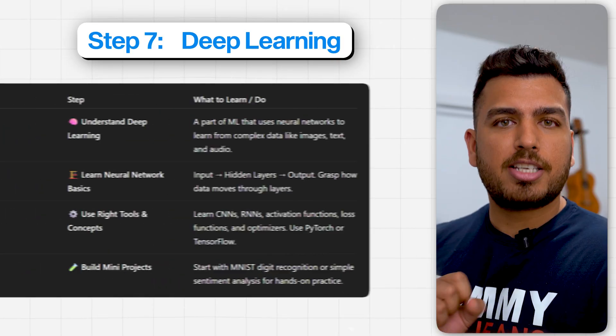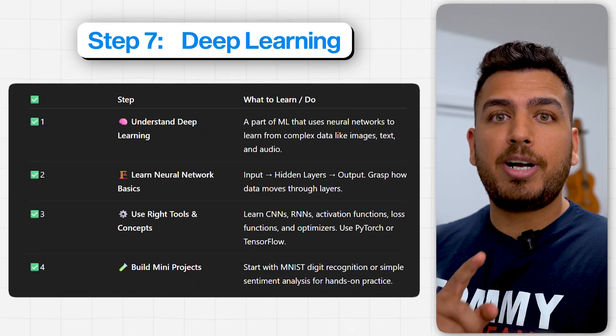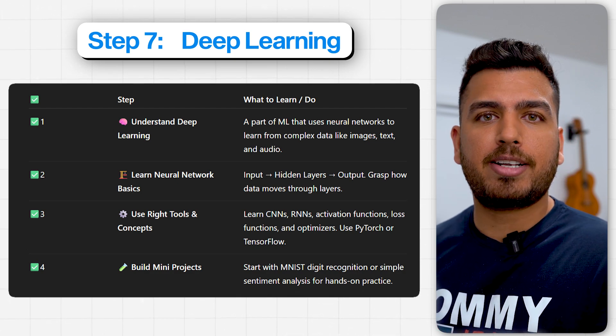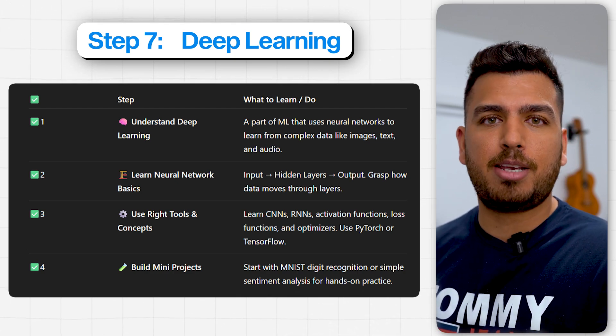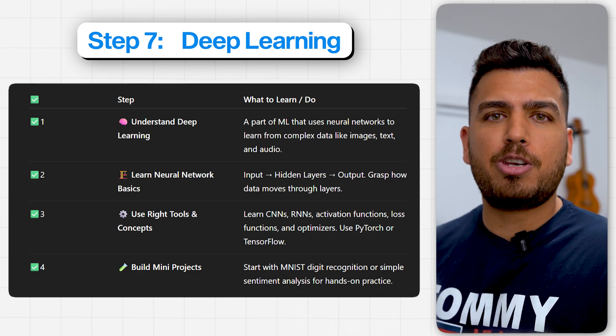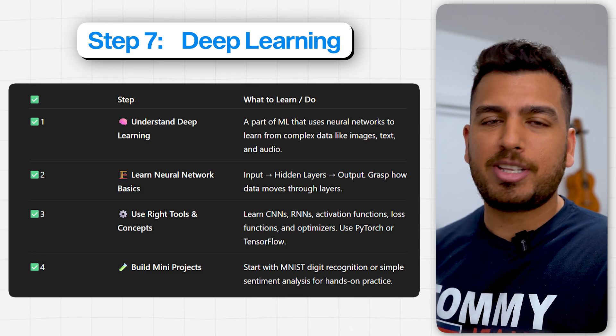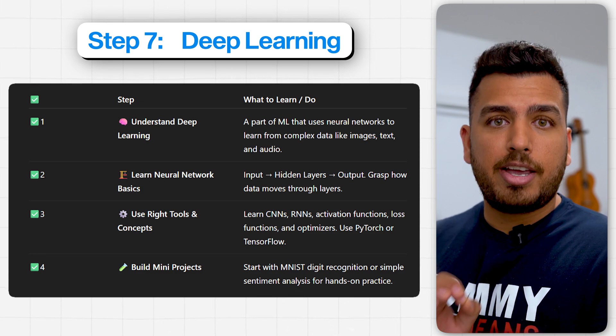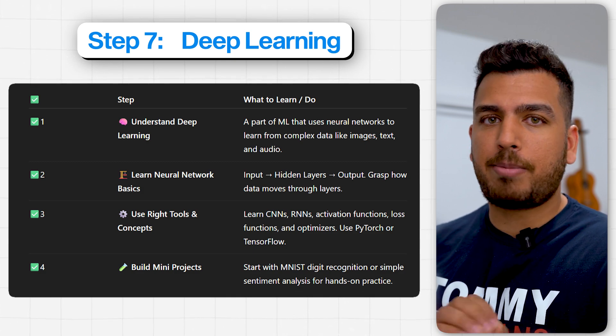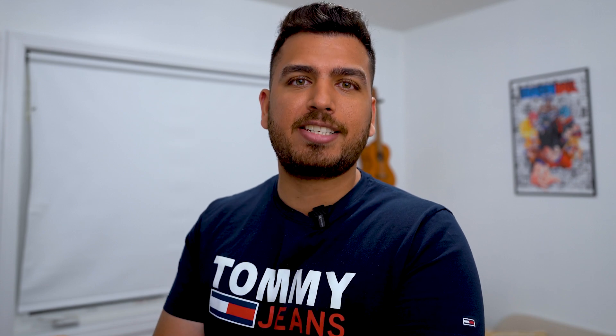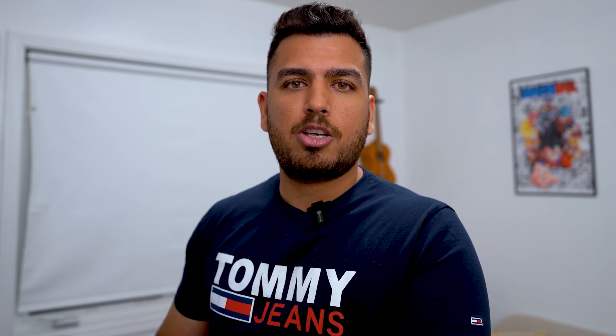If you want to go beyond machine learning, step seven is learning deep learning — a subset of machine learning that uses multi-layered neural networks to model complex patterns, especially useful in text, image, and audio data. Start with the basic structure of a neural network, which includes input layer, hidden layer, and output layer. Then explore CNNs for image data and RNNs for sequence data. Here you'll use frameworks like PyTorch and TensorFlow. I'll leave a link in the description to a YouTube channel that can help you learn data science from scratch.